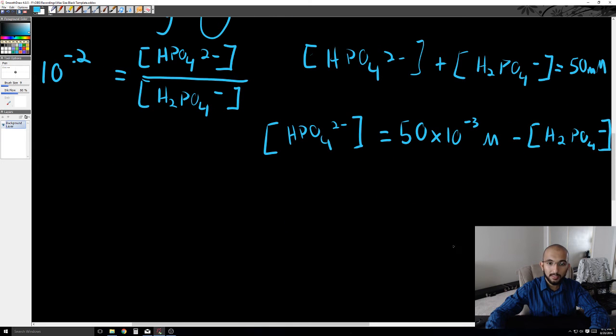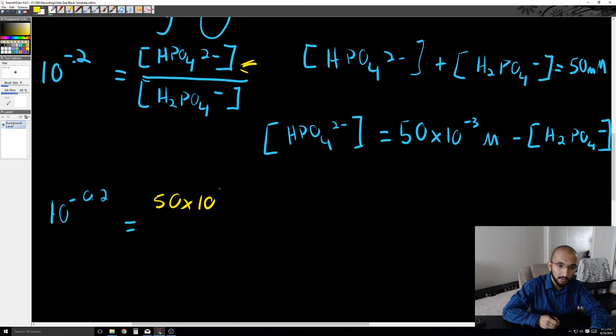And now we can substitute into this equation, and we get 10 to the whatever number we're working with is equal to, and then we substitute this top part - we get 50 times 10 to the negative 3 molar minus the concentration of H2PO4-